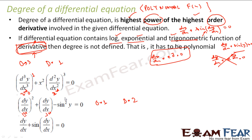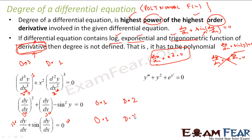Next example: dy/dx + sin(dy/dx) = 0. This is a first order derivative, so order is 1. To find degree, we check: does it have log, sin, or trigonometric function of the derivative? Yes — it has sin(dy/dx). That means the degree is not defined.